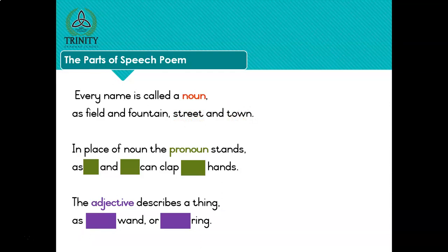In place of noun the pronoun stands as he and she can clap their hands. The adjective describes a thing as magic wand or bridal ring.